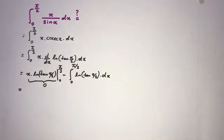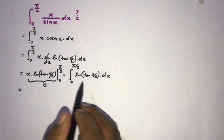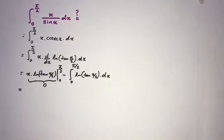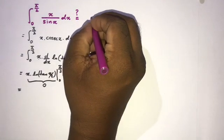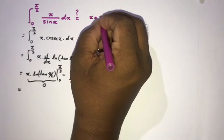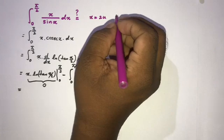We are left with minus the integral from 0 to π/2 of natural log of tan(x/2) dx. To evaluate this integral I am going to use a substitution: let x equal 2u.